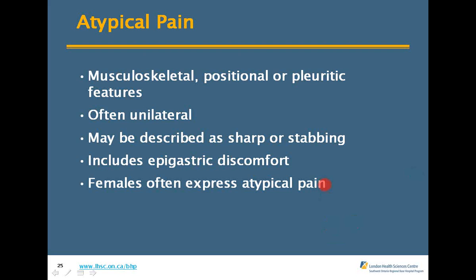The atypical presentation of ACS is a big landmine for paramedics. There's a lot of confusing literature out there. Initial teaching was that if the chest wall was tender to touch, it could be ruled out as musculoskeletal — but that has changed. There's now good evidence showing that 15% of patients having an acute MI will have chest wall tenderness on palpation, so we have to take that with a grain of salt.